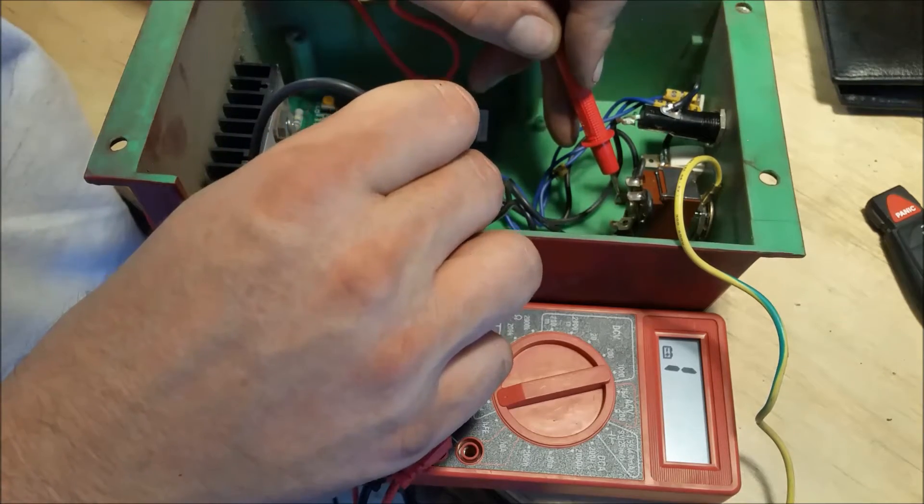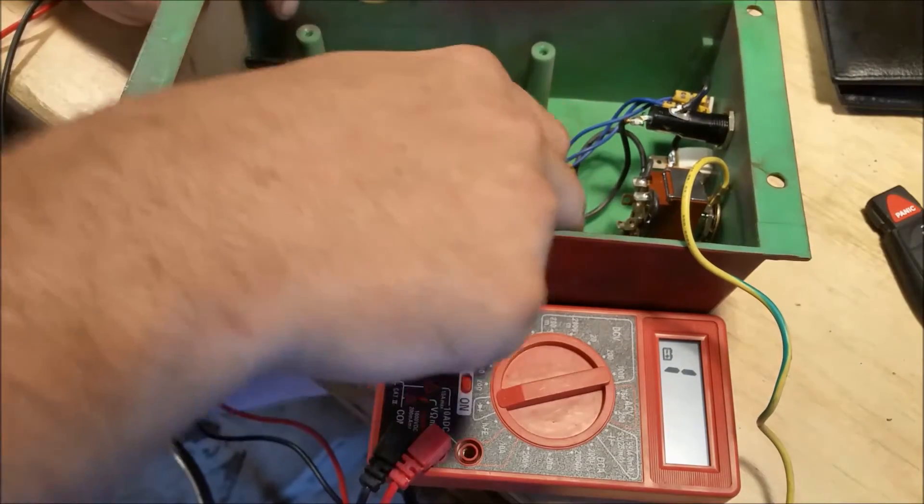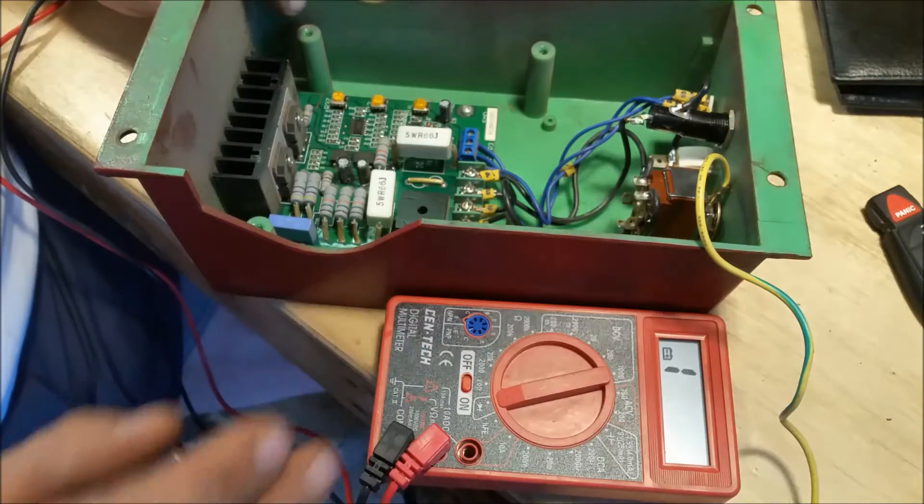I went over to the local Radio Shack and picked up a 30 amp dual pole dual throw switch and I'm going to duplicate the existing switch that's already in here.